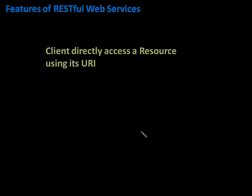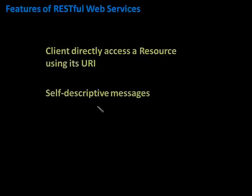There are three main features of RESTful web services. First, the client can directly access a resource using its URI, which is a direct advantage over SOAP web services where the client needs WSDL and stubs to access anything on the server. Second, the response message the client gets is self-descriptive in nature, meaning the message itself contains information about the format in which the client can read it. Third, RESTful web services uses the concept of uniform interfaces.